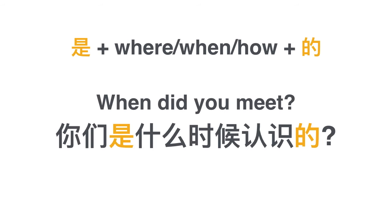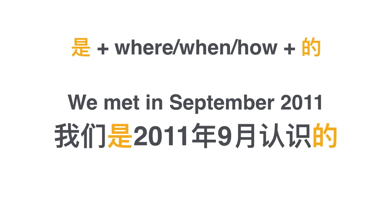When did you meet? 你们是什么时候认识的. 什么时候 means when, 认识 means meet, so 是什么时候认识的 is 'when was it that you met?' 你们是什么时候认识的. Can you guess how the answer is formed? You just replace 什么时候 with a specific date. 我们是2011年9月认识的 — that's it.